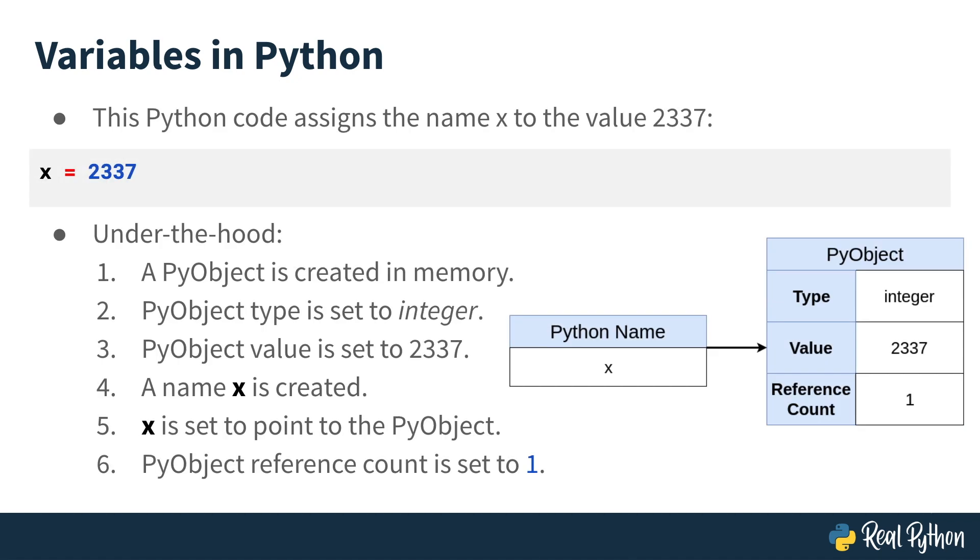Here's a line of Python code that assigns the name x to the value 2337. What's really going on under the hood is a little bit more complex than with C. That's because the standard interpreter for Python is written in C, and so all the Python code we write eventually is represented as if we wrote it in C.